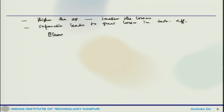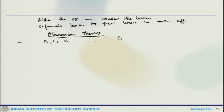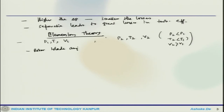With that we will look at the elementary theory. Let us consider a gas entering a row of nozzle blades with conditions P1, T1, and V1, and it leaves at station 2 with P2, T2, and V2, where P2 is less than P1, T2 is less than T1, and V2 is greater than V1. The rotor blade angle beta 2 is such that the gas enters the passage smoothly. After being deflected and after further expansion in the rotor blade passages, gas leaves at P3, T3, relative velocity W3, and at angle beta 3.